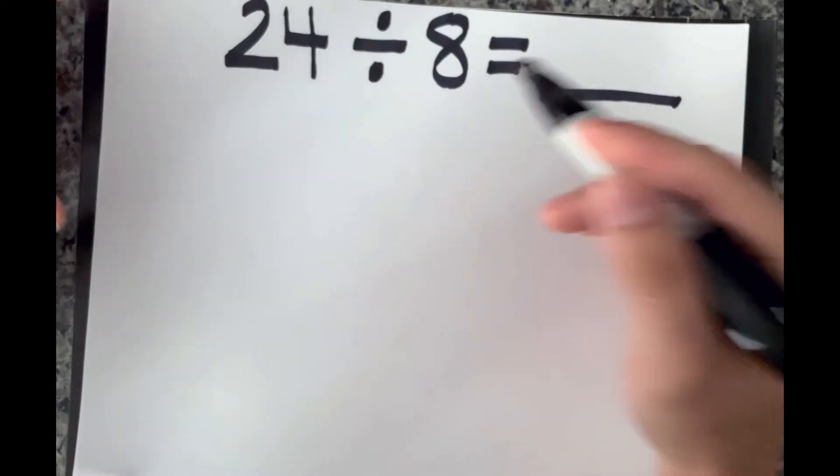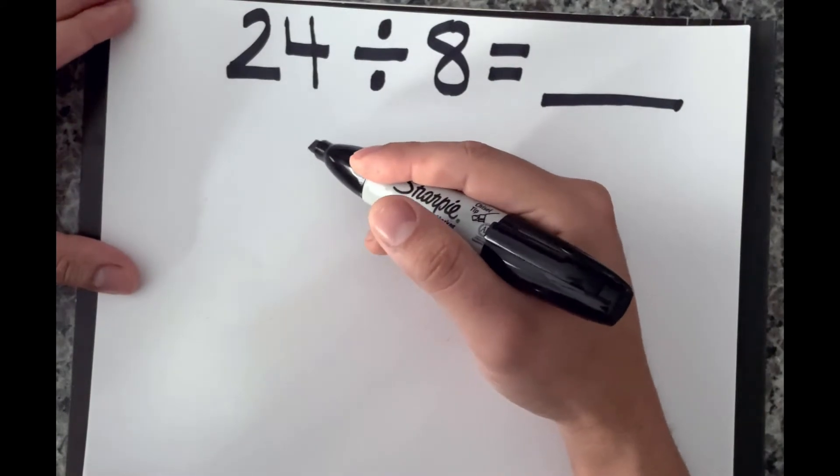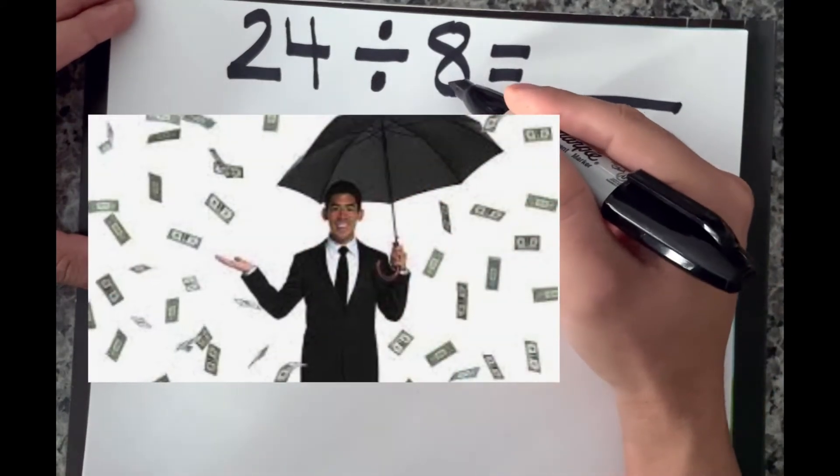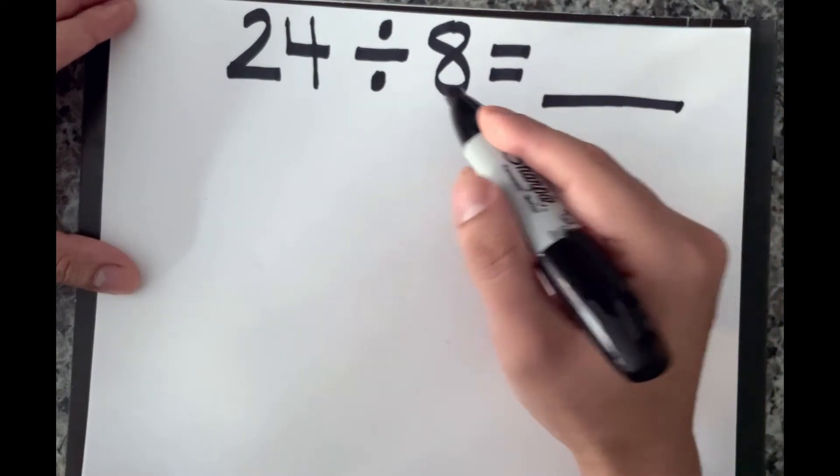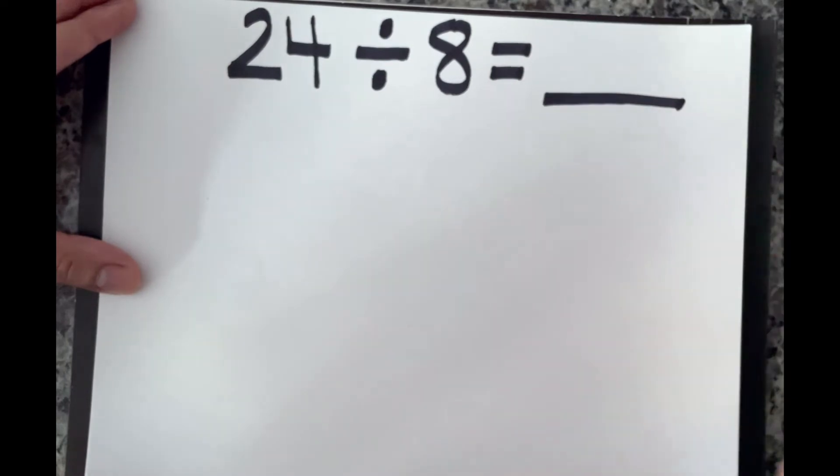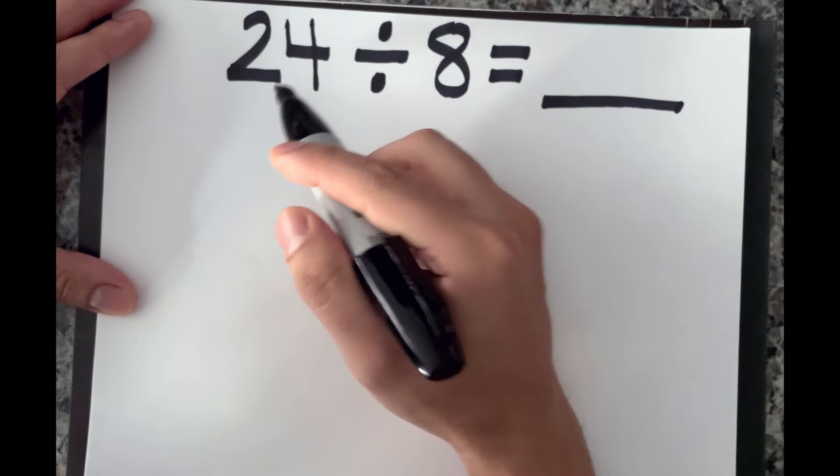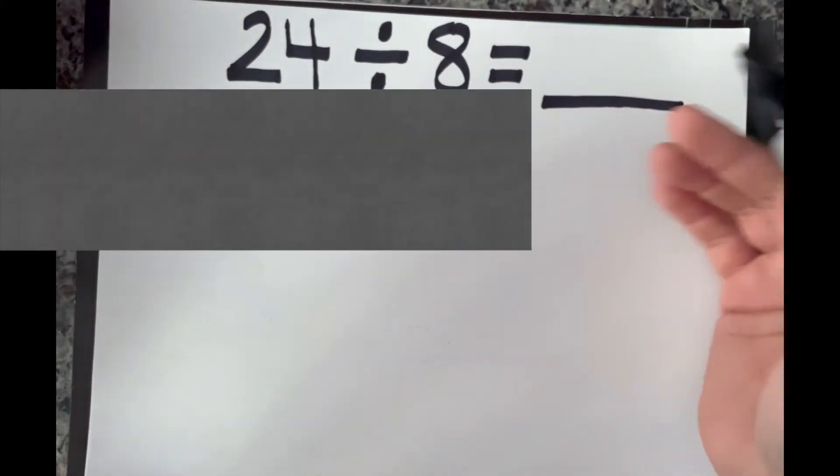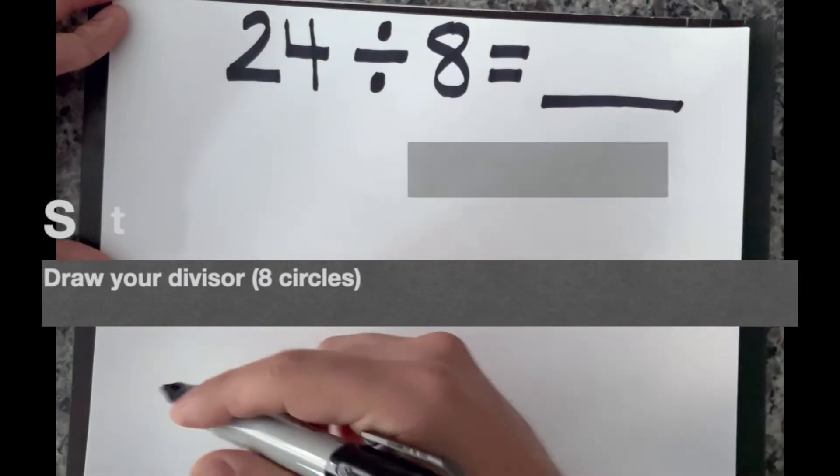So maybe we have 24 bucks, 24 dollars, and we gotta split this money between eight kids. So we would have to make sure that everybody gets the same amount if we're going to split the money up. So this is what you're going to do. So we know that we have to split up 24 into eight equal groups. So the first thing you'll do is you'll draw eight circles to represent our eight equal groups. I'm going to go ahead and do that now.